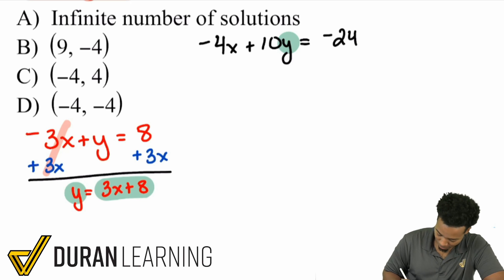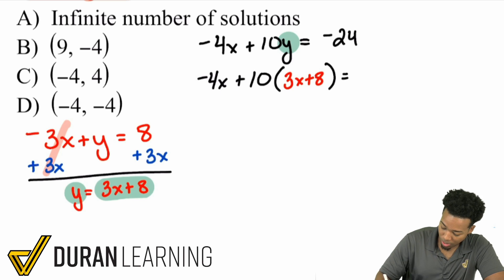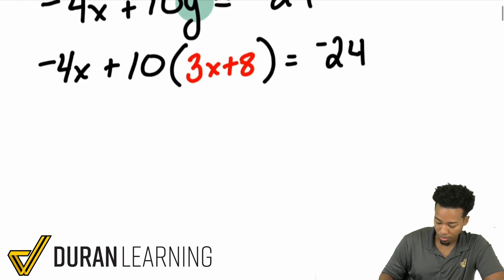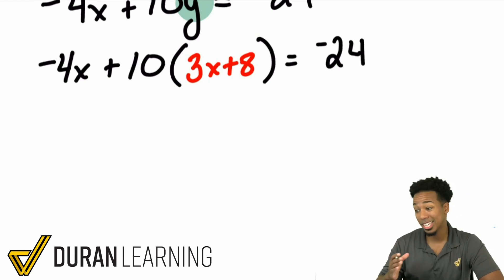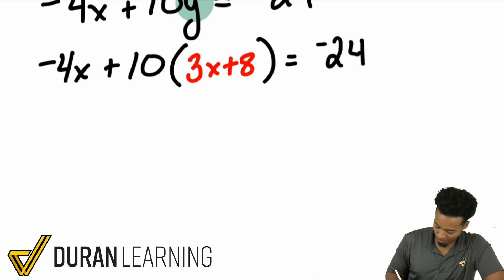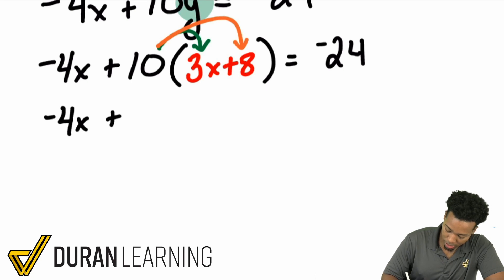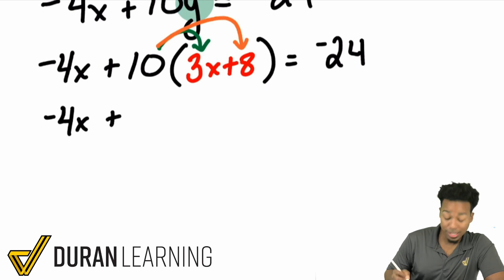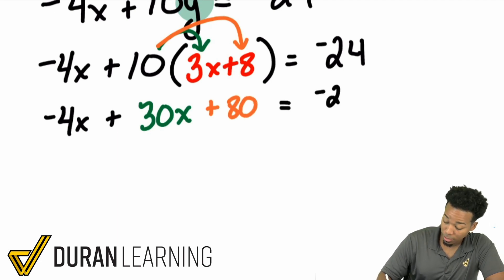So I'll rewrite the first equation as negative 4X plus 10 times Y, and what Y is equals 3X plus 8, all equal to negative 24. Now we have to distribute. The 10 distributes to the 3X giving 30X, and the 10 also distributes to the positive 8 giving 80. So we have negative 4X plus 30X plus 80 equals negative 24.